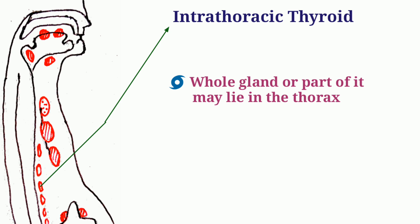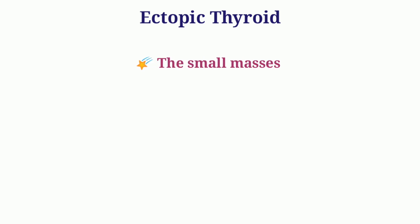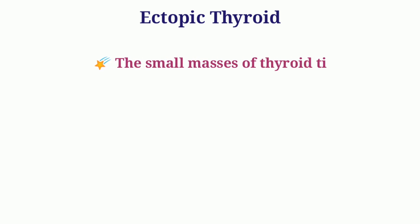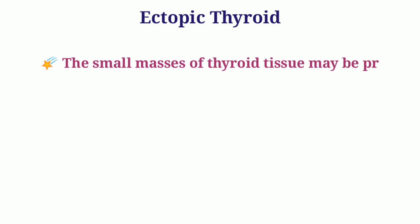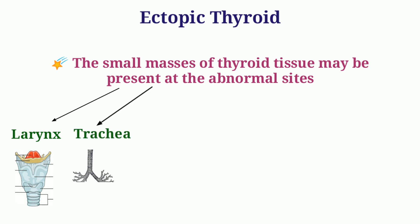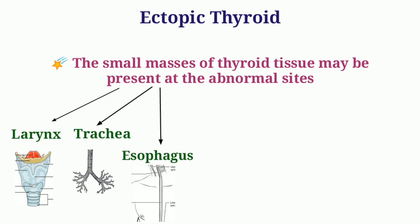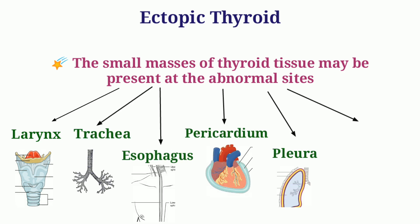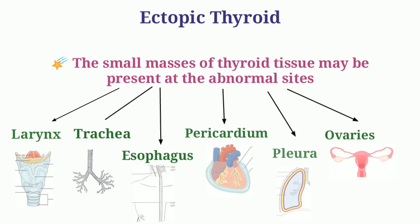Ectopic thyroid refers to small masses of thyroid tissue — not the whole gland — that may be present at abnormal sites. Examples include the larynx, trachea, esophagus, pericardium, pleura, or the ovaries.